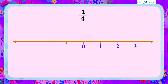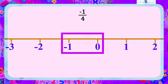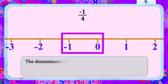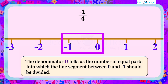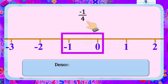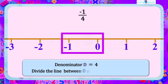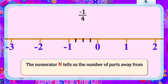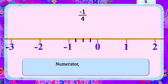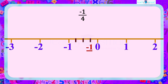Draw a number line. Let's focus on the line segment between 0 and -1. Remember, the denominator D tells us the number of equal parts into which the line segment between 0 and -1 should be divided. Here D equals 4, so we divide the line between 0 and -1 into 4 equal parts. The numerator N tells us the number of parts away from 0 where the rational number lies. Here N equals 1, so we take 1 part from 0 and mark -1/4 there.